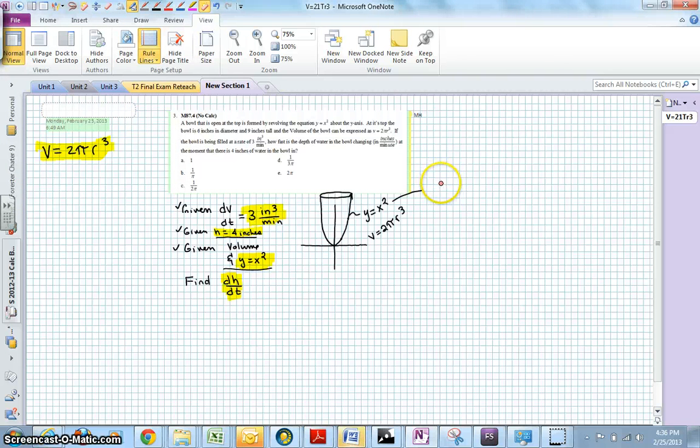Now it wasn't said in the problem statement that the height and the radius are related, but because this curve is revolved around the y axis, you can see that height goes with y, and radius goes with x.